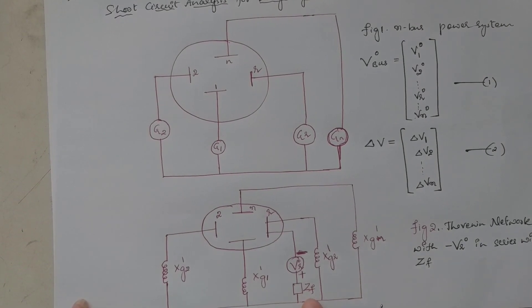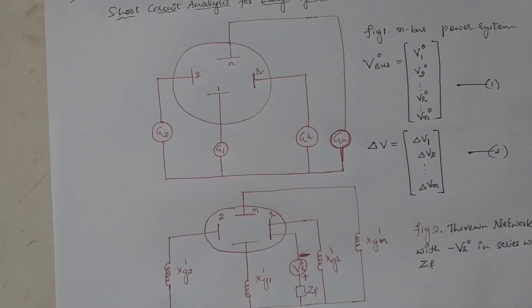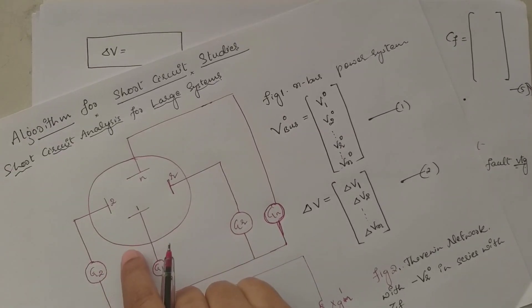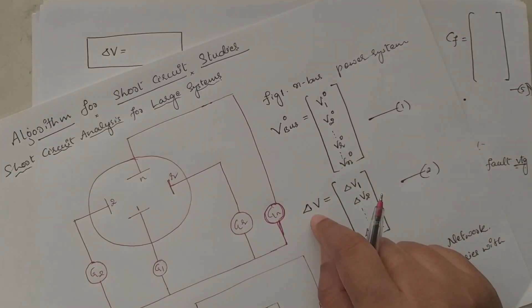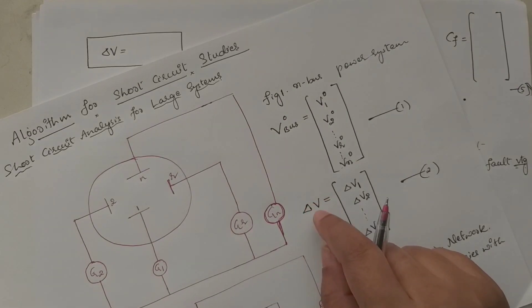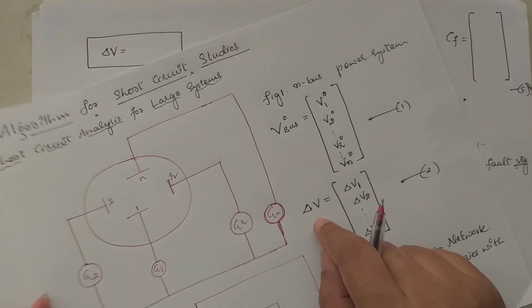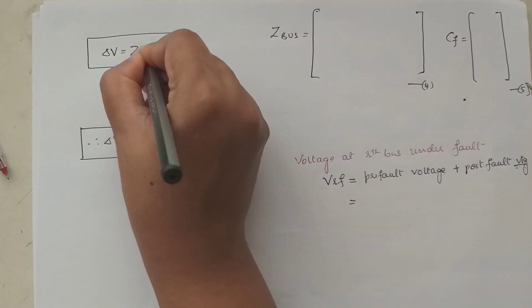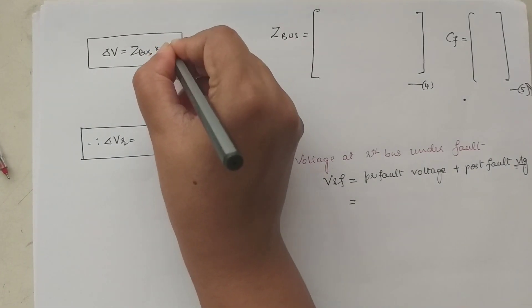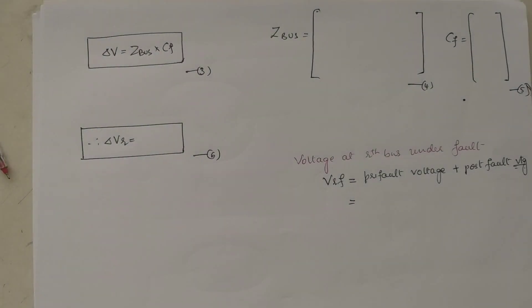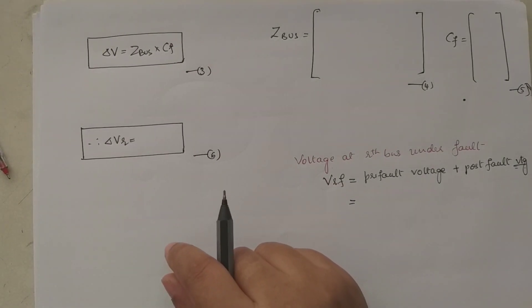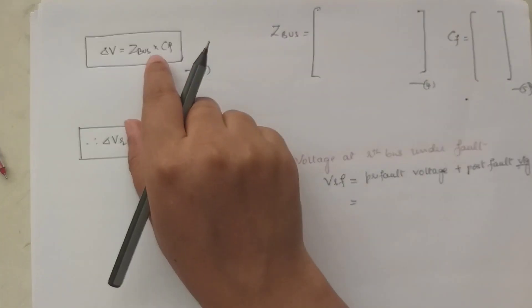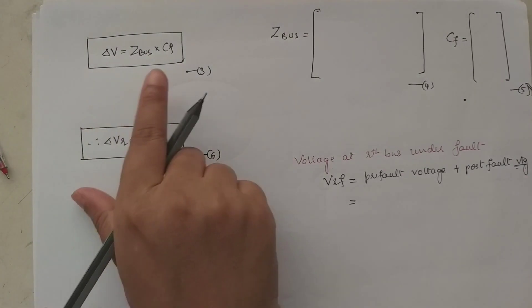From the circuit we can write: ΔV (post-fault voltage) equals Z_bus multiplied by the current injection vector. Instead of I, we represent it by CF, where CF is the current injection vector. The network is injected with current of −If only at the r-th bus.